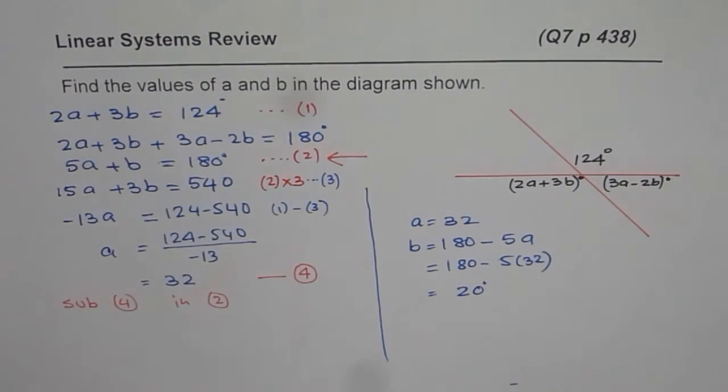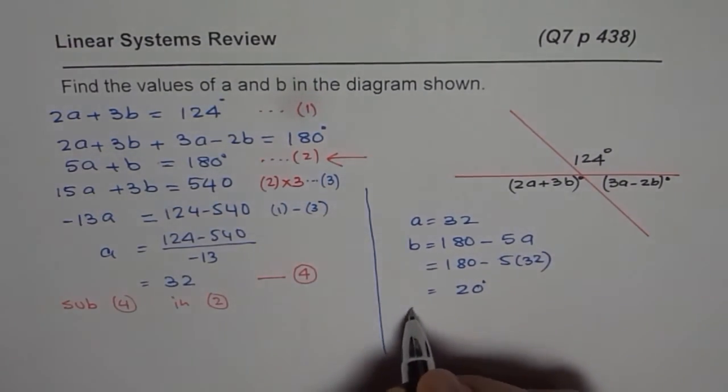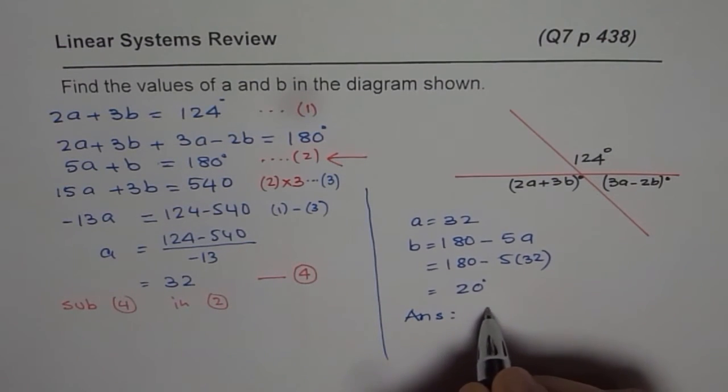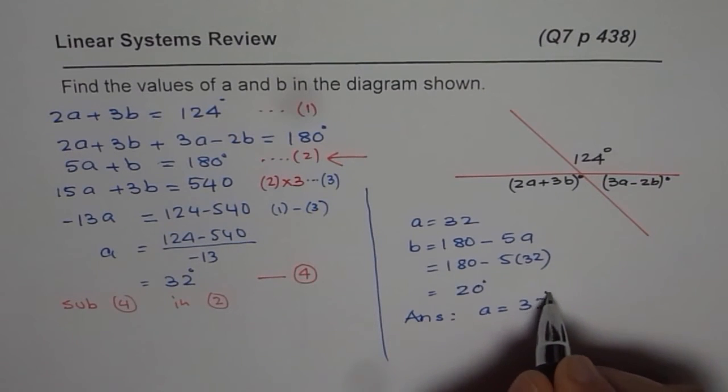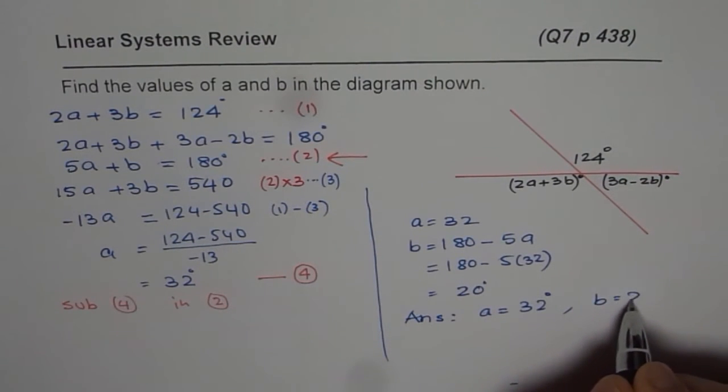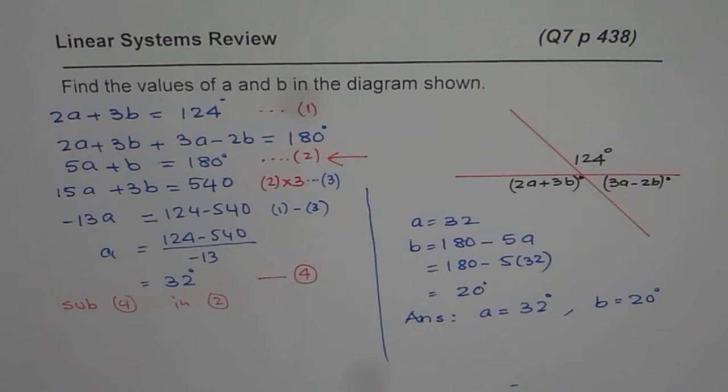So with that, we get both values of A and B. So our answer is A equals to 32 degrees. Don't forget to write degrees as the unit. And B equals to 20 degrees for the given equation. So that is how you can actually solve this linear system. I hope that helps. Some of you can also verify whether your answer is right or wrong. Substitute these values and check. Thank you.